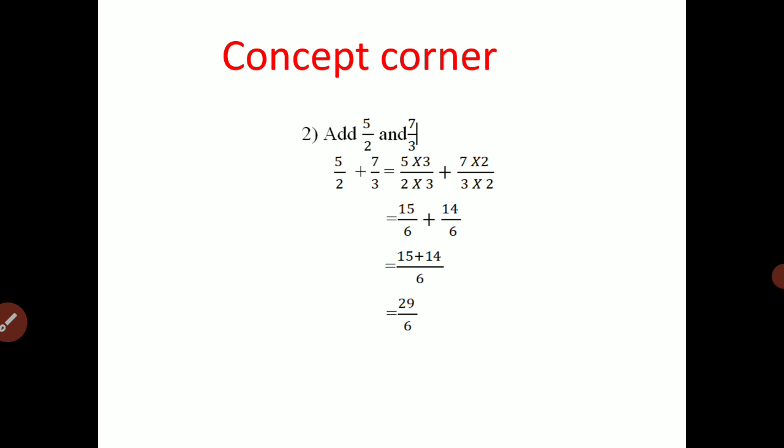With LCM 6 as the denominator: the first rational number has numerator and denominator 3, so 5 into 3 is 15, and 2 into 3 is 6 — giving 15 upon 6. The second rational number: 7 into 2 is 14, and 3 into 2 is 6 — giving 14 upon 6. Adding the numerators: 15 plus 14 equals 29, so 5 upon 2 plus 7 upon 3 equals 29 upon 6.